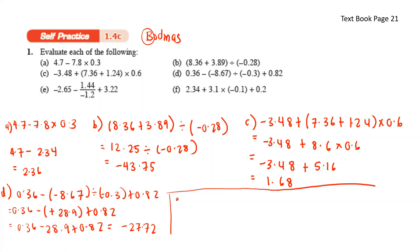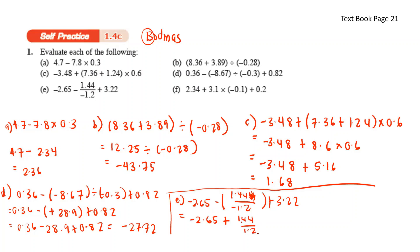For E: negative 2.65 minus the fraction 1.44 over negative 1.2, plus 3.22. Negative divided by negative gives positive, so this becomes negative 2.65 plus 1.44 over 1.2 plus 3.22. Put it in your calculator and you get 1.77.